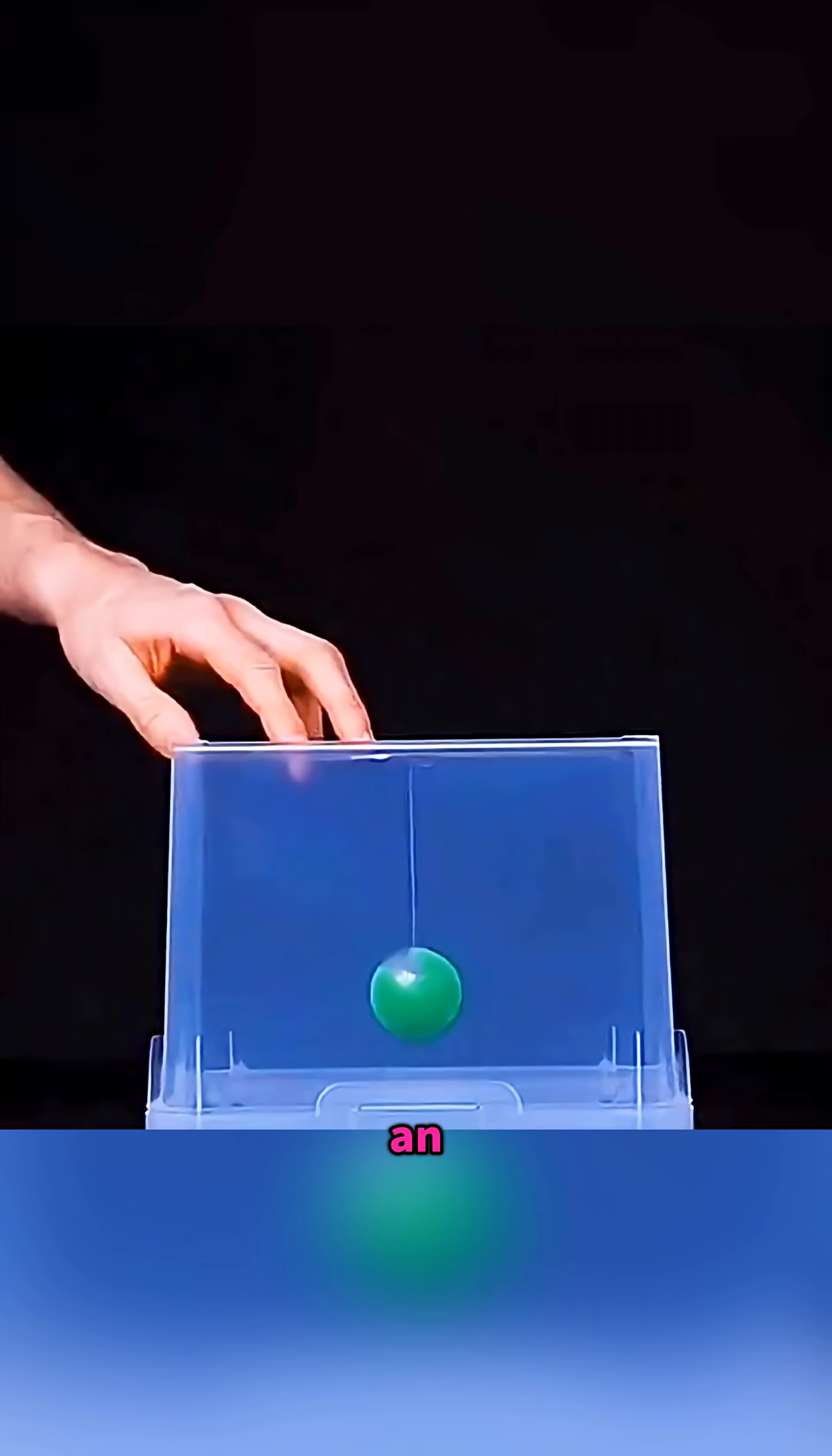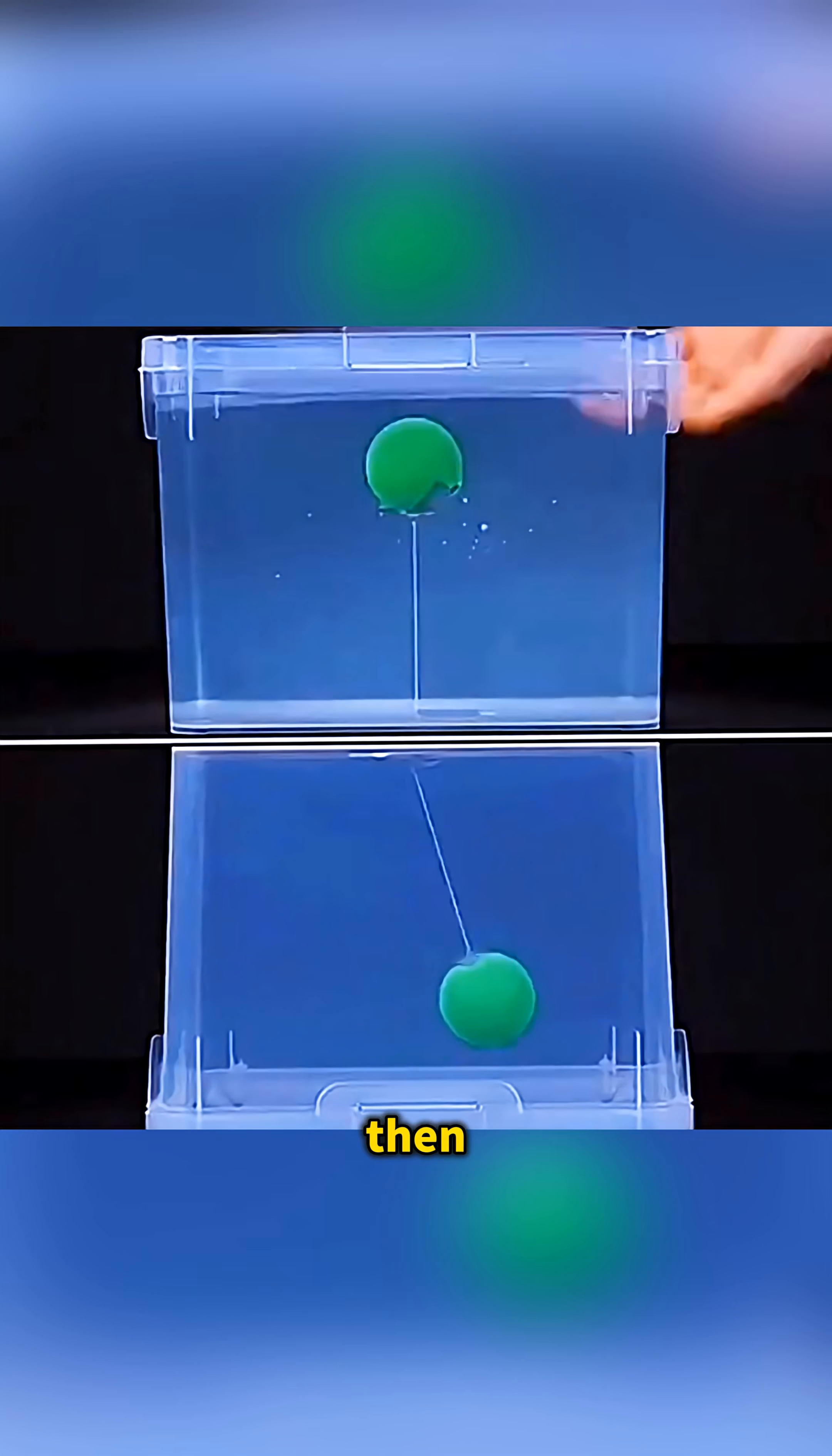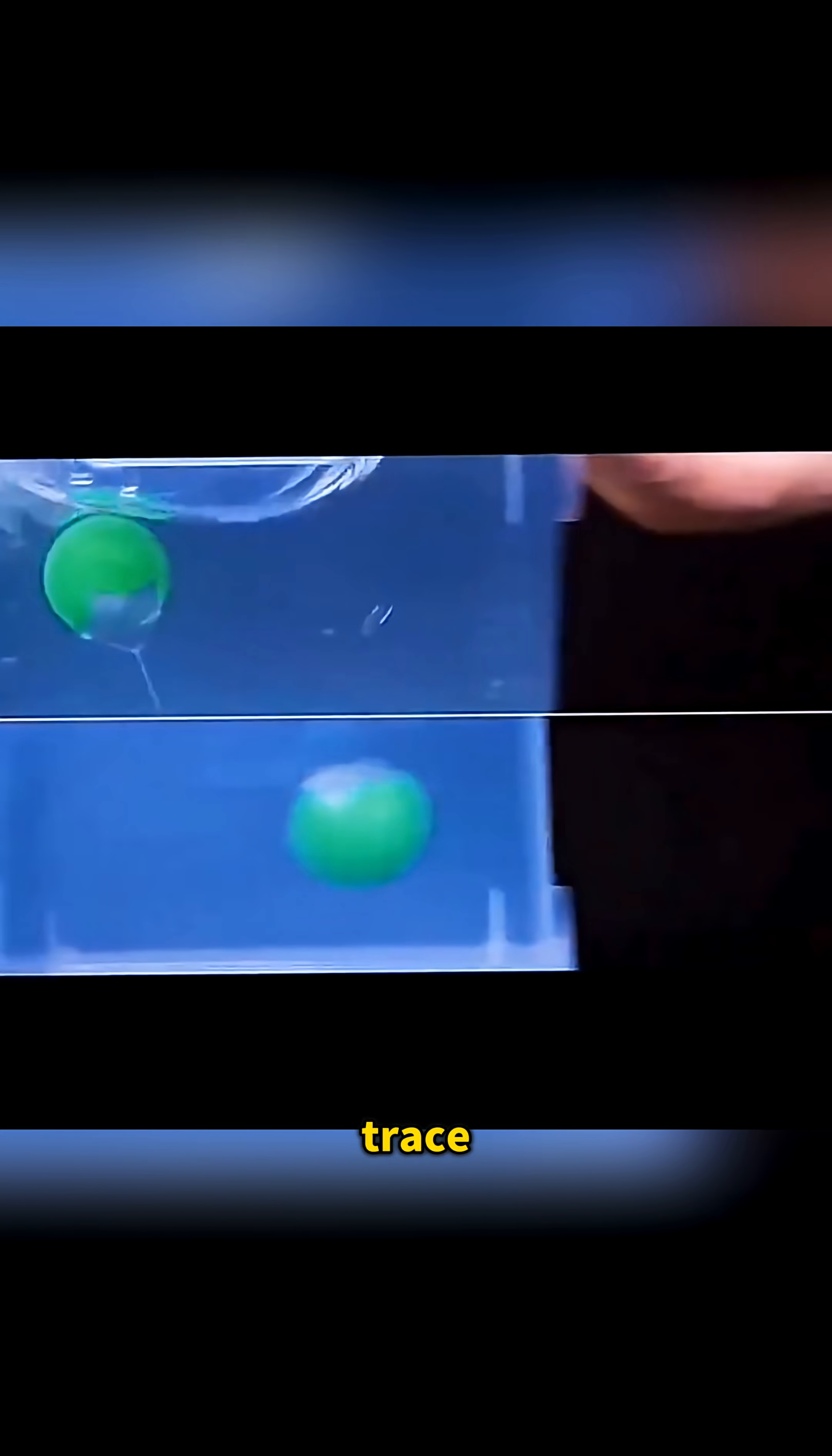Hang a small ball inside an empty box, place another box full of water on top, close the lid, then shove both boxes quickly to one side and you'll see the two balls trace completely opposite paths, one swinging with the water and the other in open air.